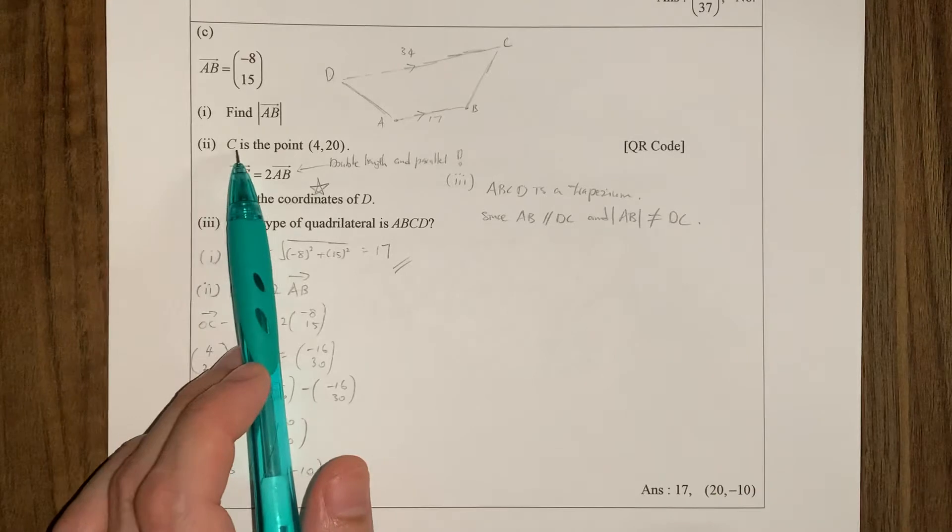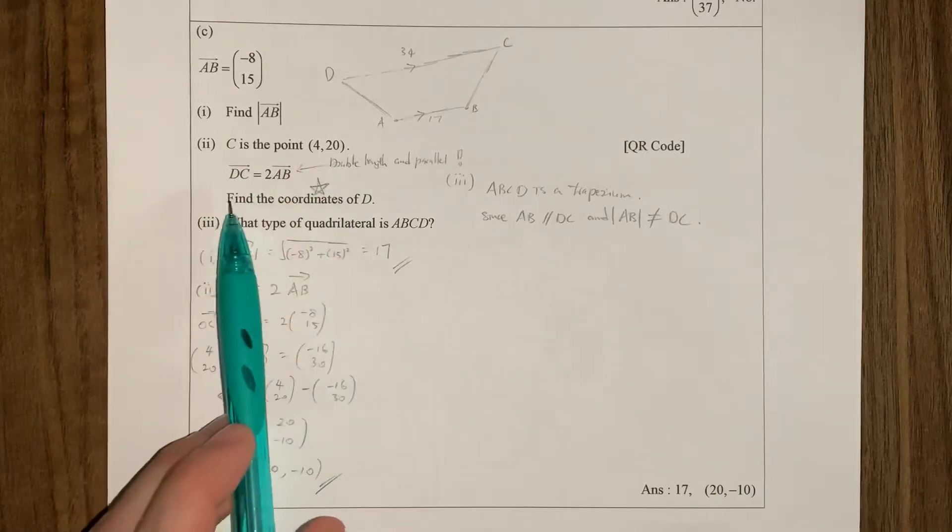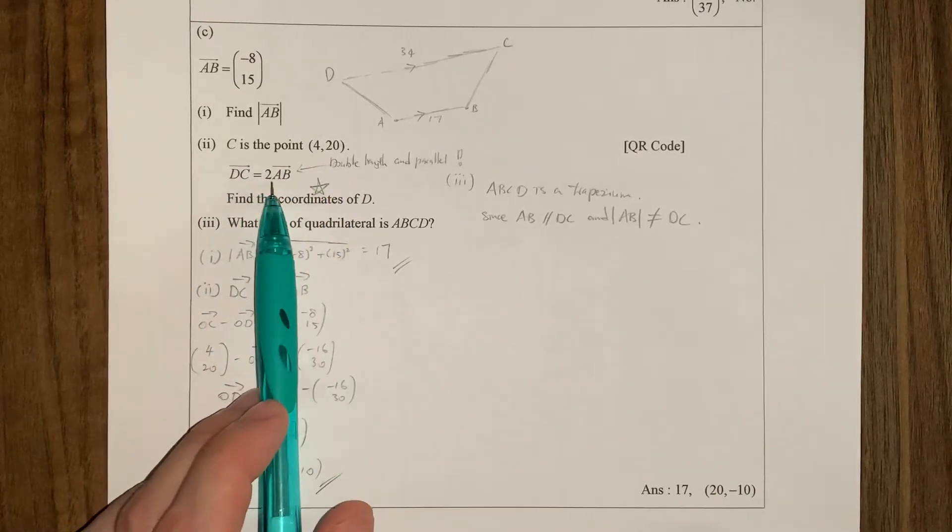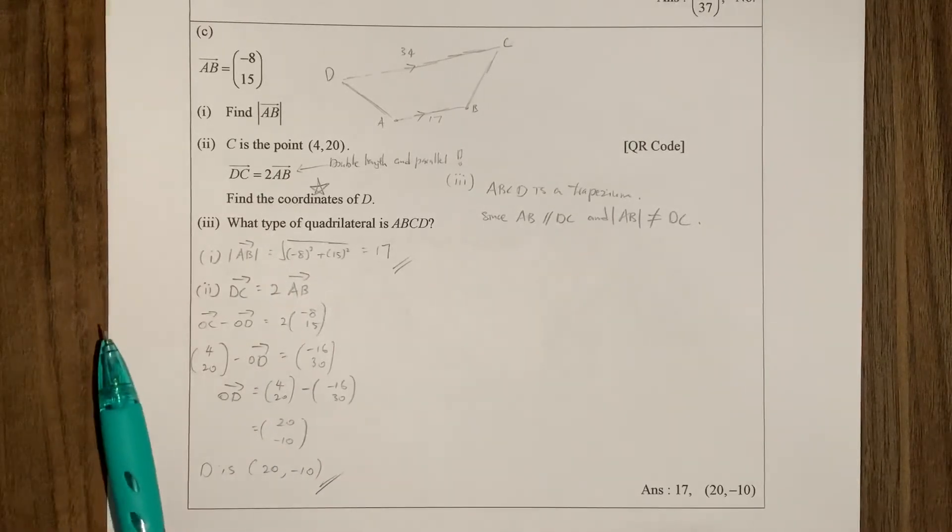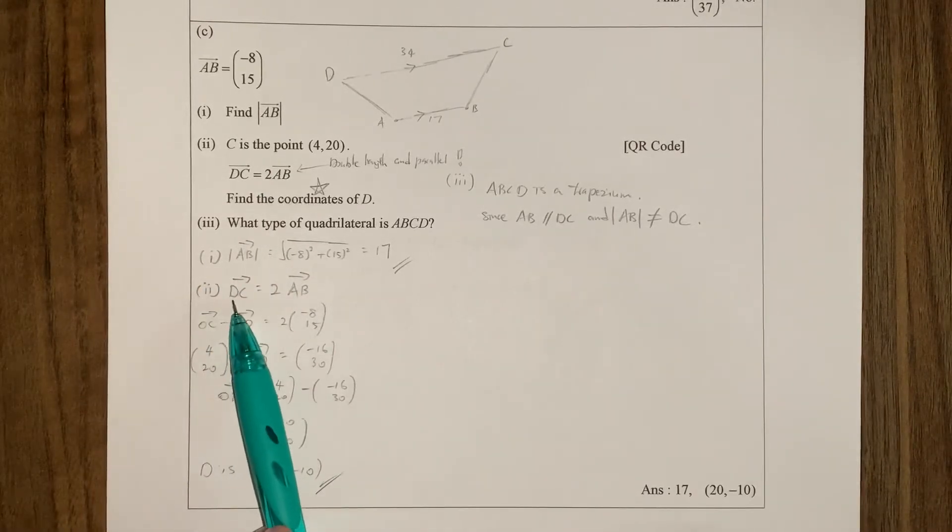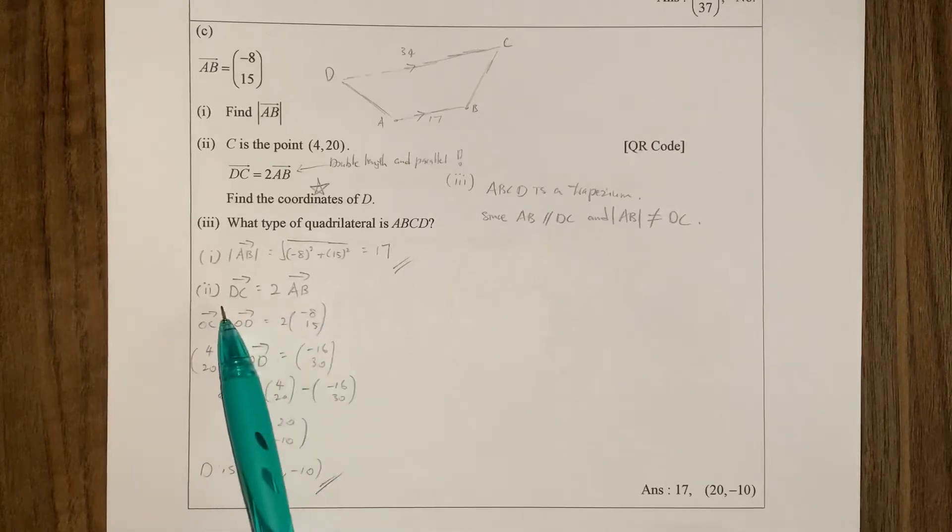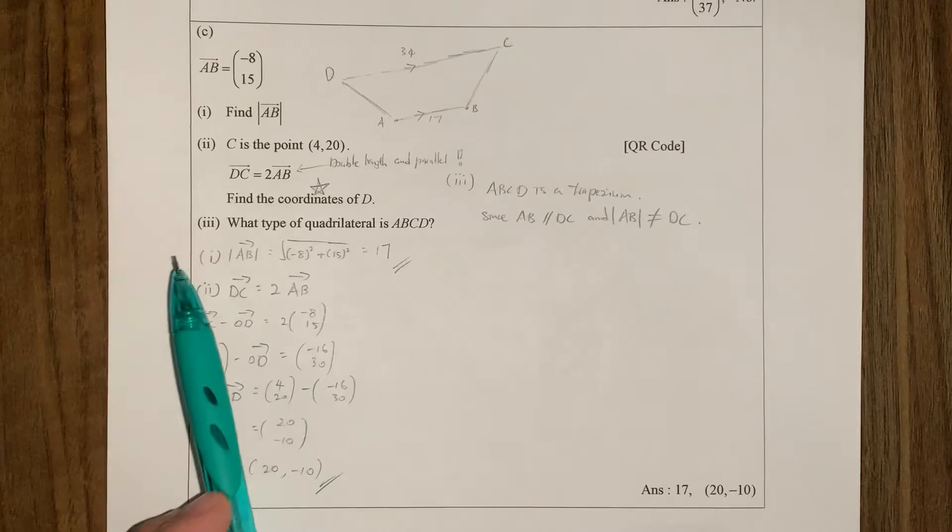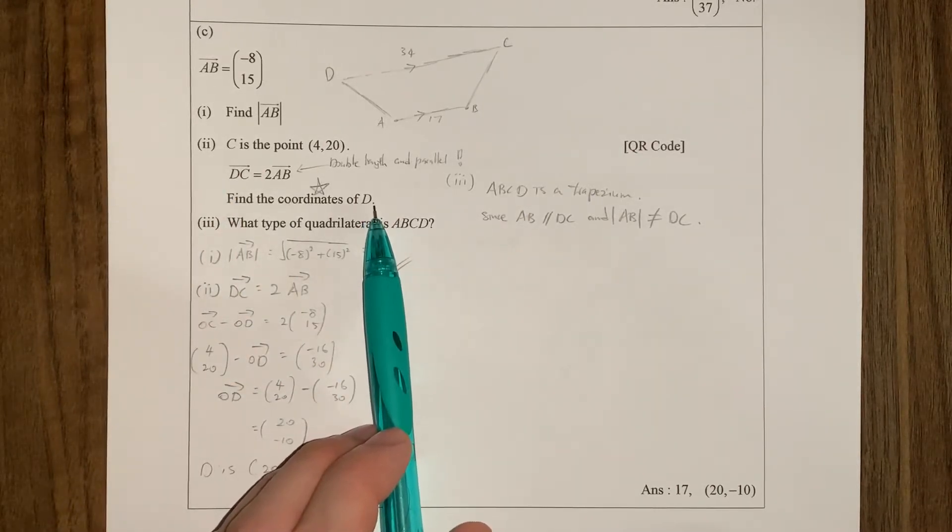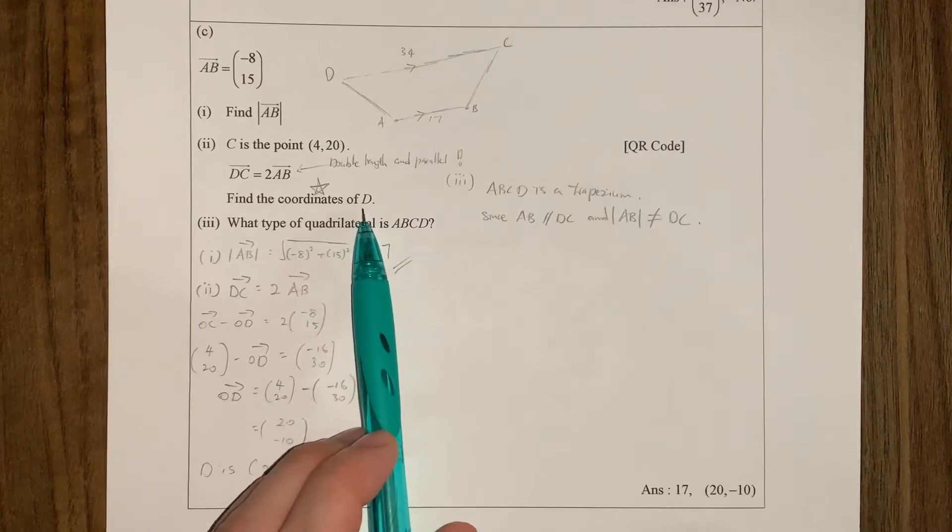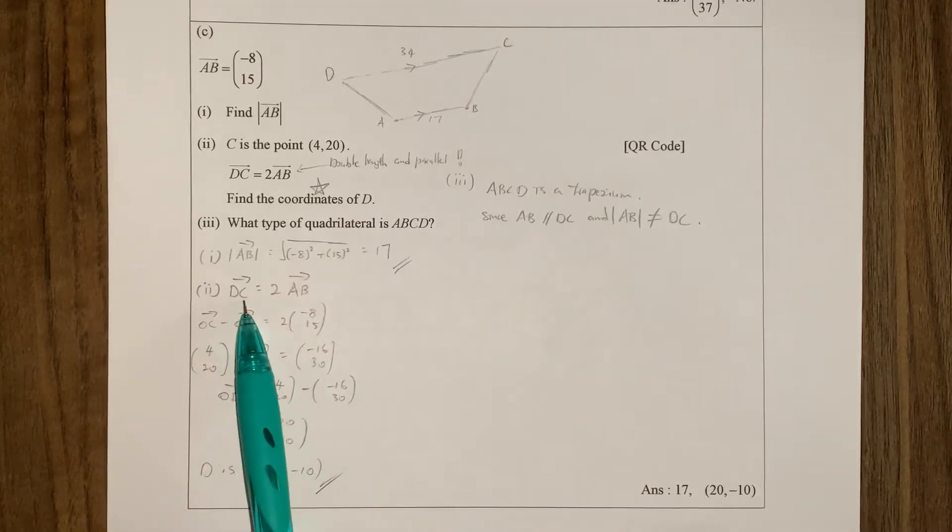So the next point is to give you C is this point and then they give you DC equal to 2AB. So this is where a position vector comes in very handy. So I start with writing what they give us and then I'm going to split this up because at the end of the day I want D which means I want OD. I want coordinates, right? So I need to find OD first. So I need to split this up.